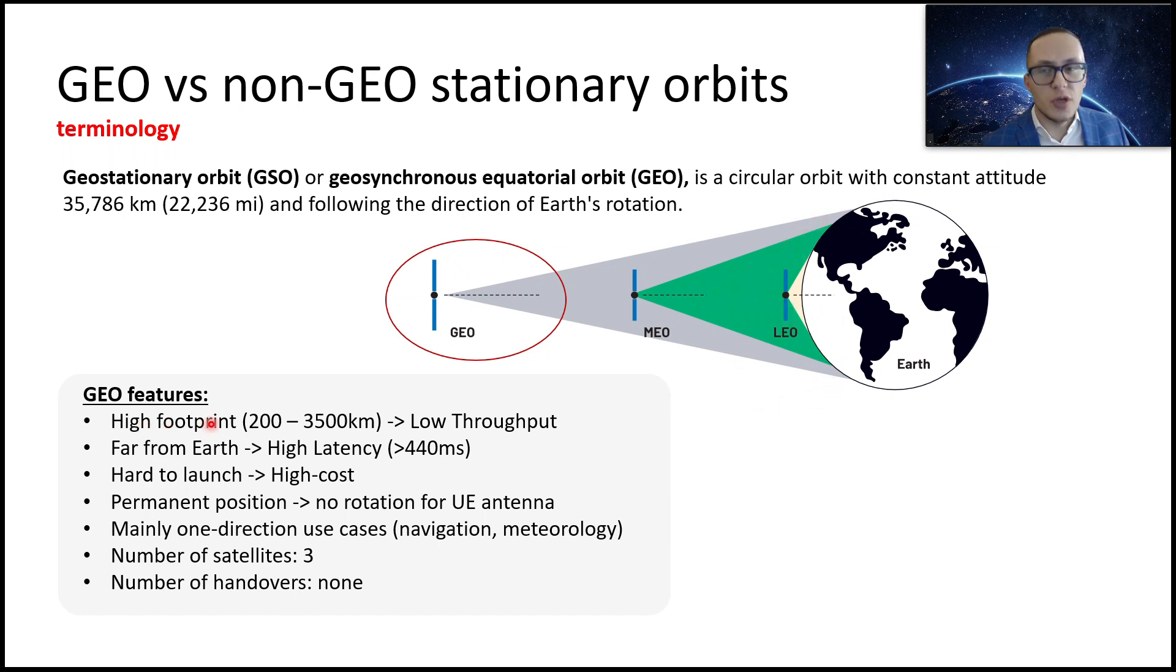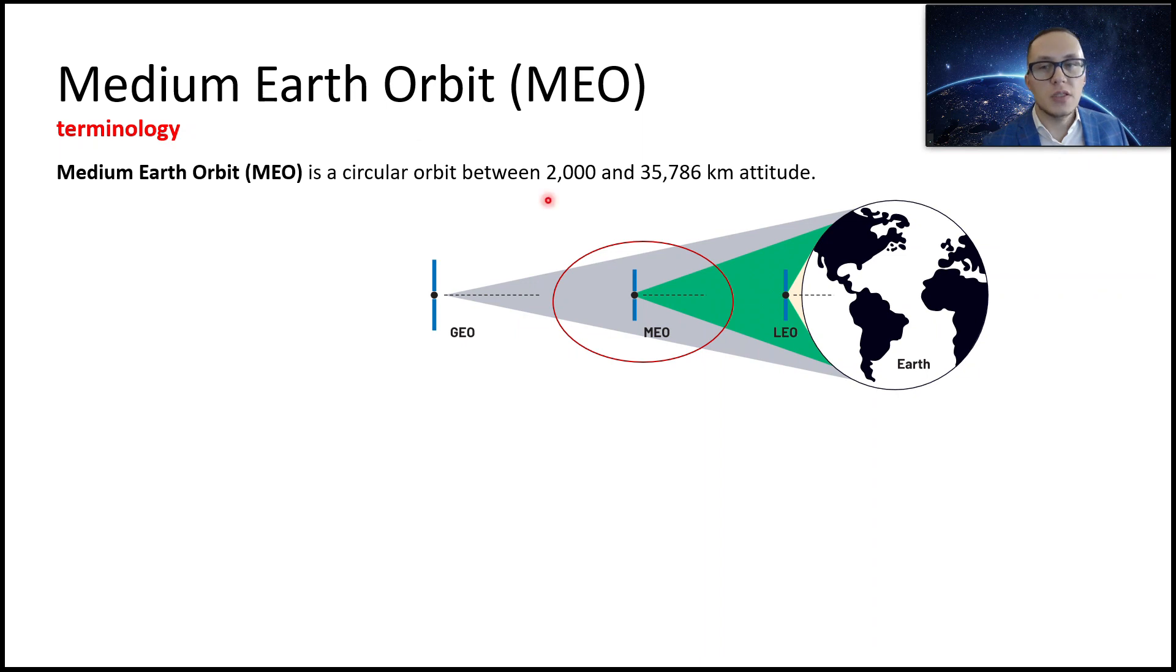There is also medium earth orbit. This is the satellites who have orbit in between 2,000 and 35,000 kilometers altitude. Something in between GEO and LEO.